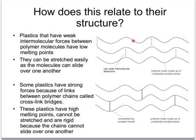Stretchy and flexible plastics are made out of long hydrocarbon polymer chains which are only loosely held together by weak intermolecular forces, shown here by the dotted lines. When one of these plastics is stretched, the chains of the polymer slide past the chains of the next polymer along and the plastic gets longer. When you stop pulling, the chains make new weak attractions between each other and hold their new shape together.